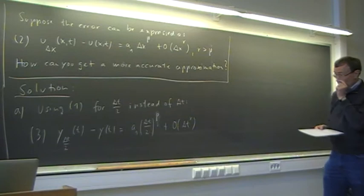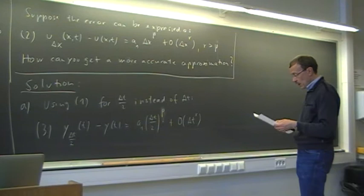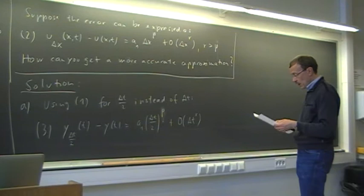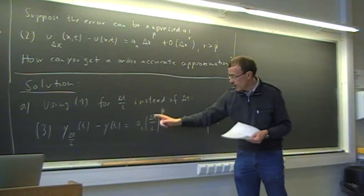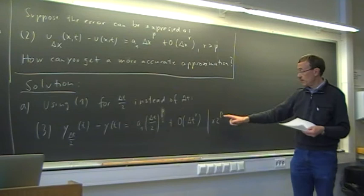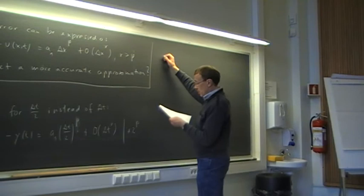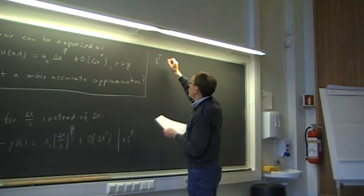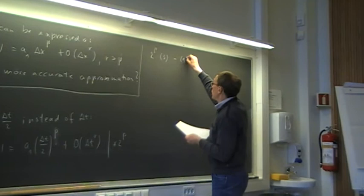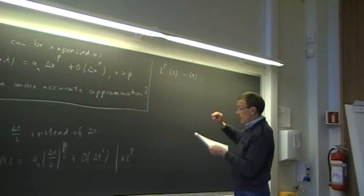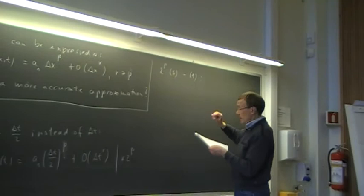What we do now is we want to eliminate this leading error term — that is the goal. We can multiply the equation for delta t half by 2 to the power p. Then we get delta t half to the power p divided by 2 to the power p, which matches the delta t term in relation 1. So we compute 2^p times equation 3 minus equation 1, and by that we can eliminate the leading error term.